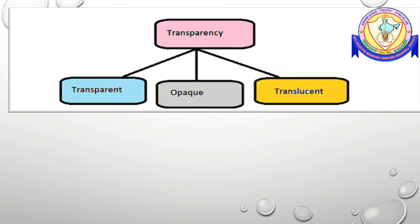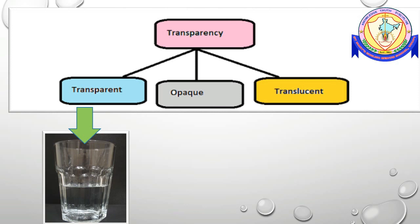Transparency is another property of materials. Think of the game of hide and seek — you would not hide behind a glass window because your friends can see through it. Can you see through all materials? Substances or materials through which things can be clearly seen are called transparent. Glass, water, air, and some plastics are examples of transparent materials.